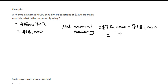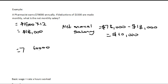So the net annual salary is equal to $78,000 minus the $18,000 in deductions for the entire year, and that equals $60,000. Now they ask us to find the net monthly salary, which is equal to the net annual salary of $60,000 divided by 12, and that is equal to $5,000.